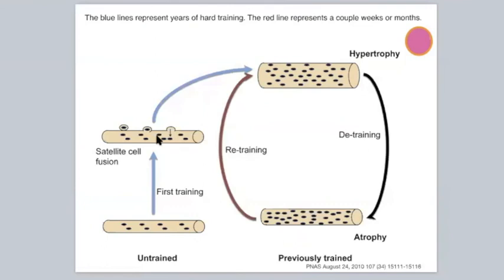One last thing: the more myosatellites you have when you're younger — and you can build them a lot easier when you're younger — the more you'll have to lose later. More nuclei means more protein synthesis available. So just like bone, build it up now and you'll have more to lose later.